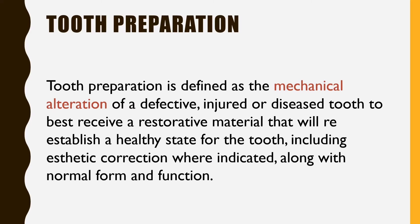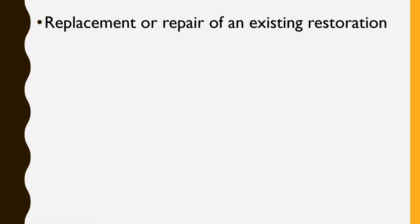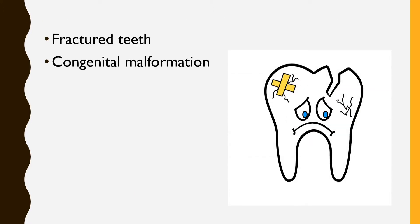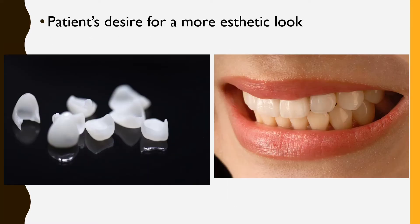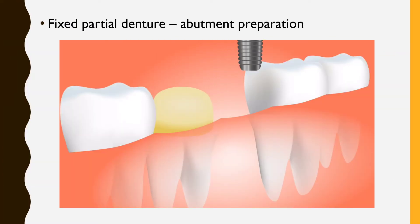Tooth preparation is done for many other reasons, not just for treatment of a carious lesion. The other reasons include: replacing or repairing an existing restoration with faulty margins, poor aesthetics, or improper proximal contacts; restoring teeth with fractures or malformations; patient's desire for a more aesthetic look such as veneers; replacing a restoration that doesn't look good; and when replacing a tooth with a fixed partial denture, the adjacent abutment teeth also need to be prepared.